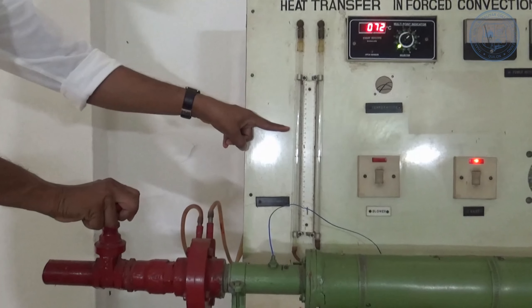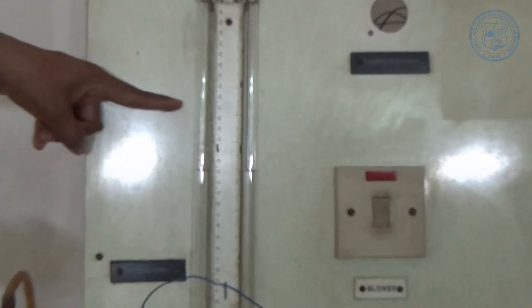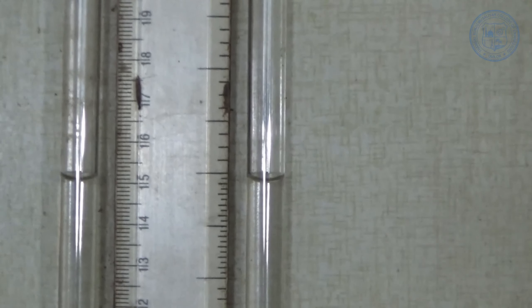Open the delivery valve slightly to ensure the air flows through the pipe by observing the manometer reading.